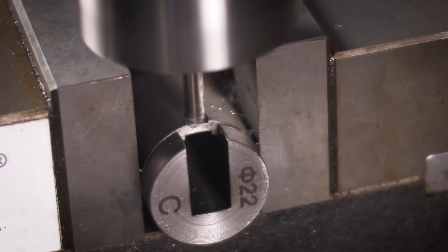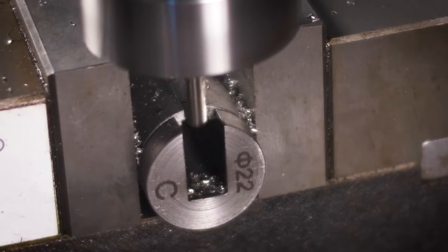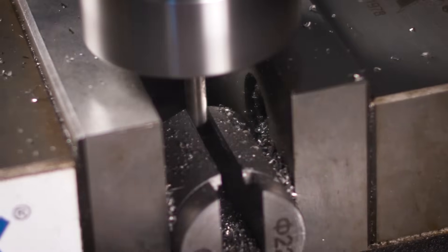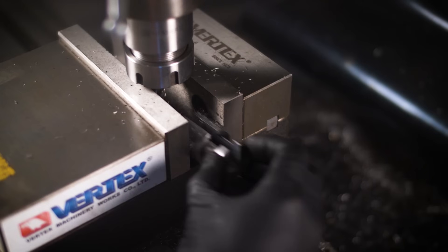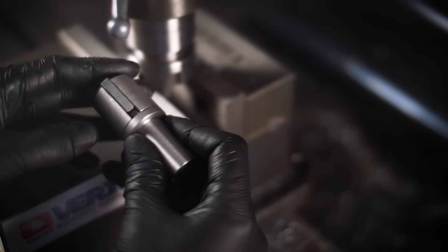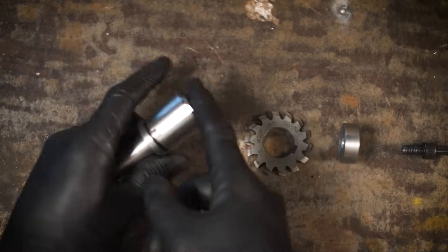So I resorted to the method I should have used and fully milled the slot full depth. And this will definitely suffice for a spacer. And with that, the spacer's complete. I quickly made up a clamping nut. And the cutter's complete.